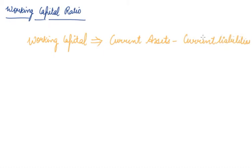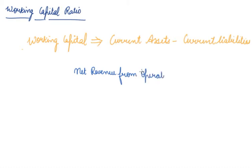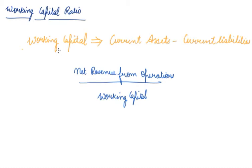Now, what is the formula to calculate working capital turnover ratio? You can find it out as net revenue from operations divided by working capital. Working capital is calculated as current assets minus current liabilities.